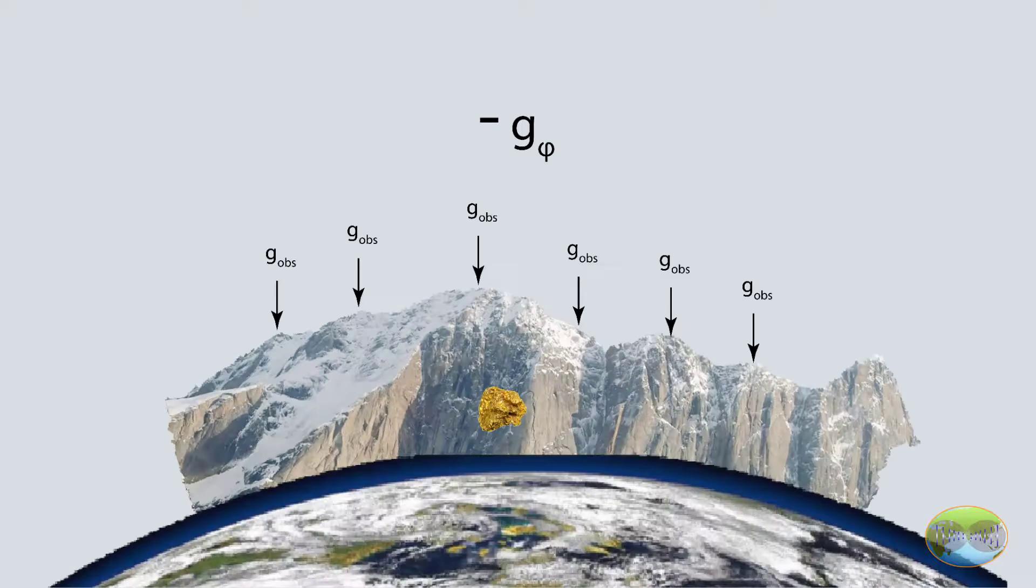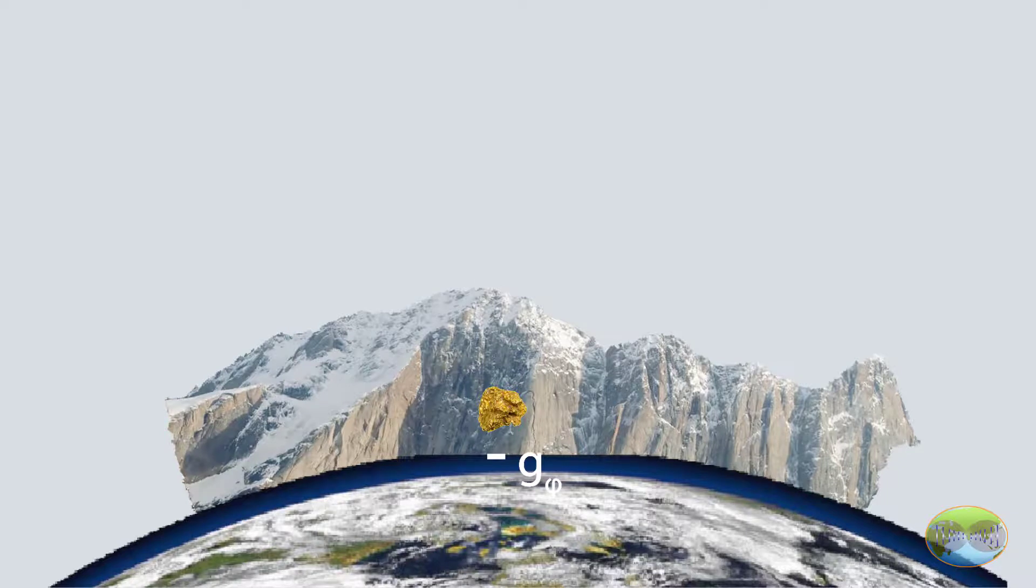The second correction that is applied is altitude or free air correction. As you must know, the gravitational field has an inverse square relationship with distance, so the gravity field decays with a rate of 0.3086 milligals per kilometer. What we have removed when we applied latitude correction is the field at the surface of the spheroid,